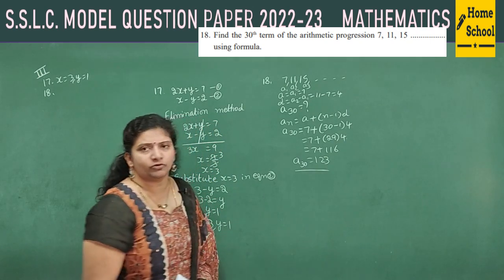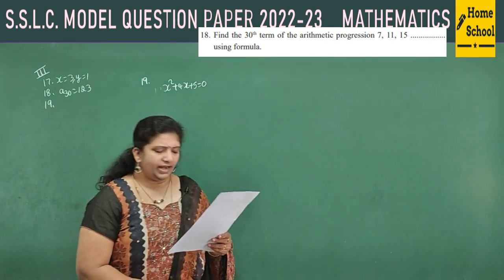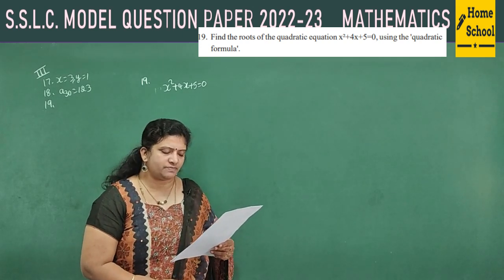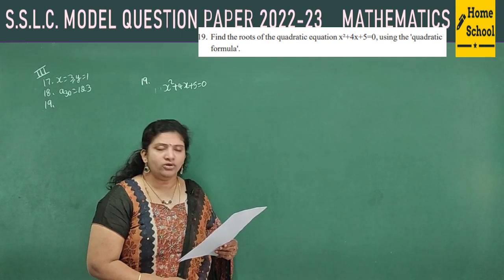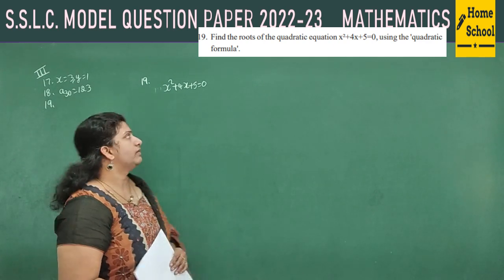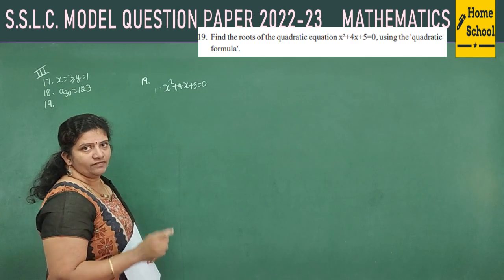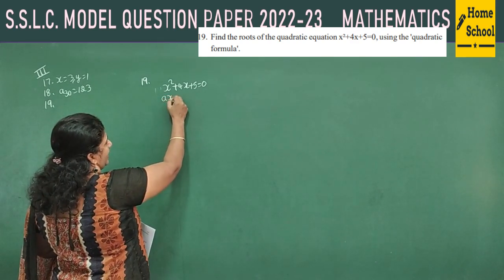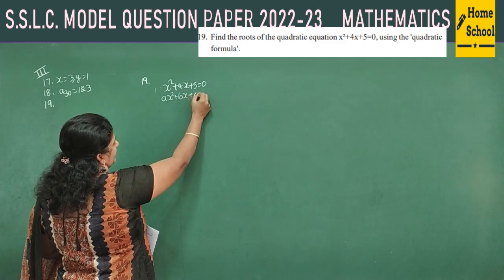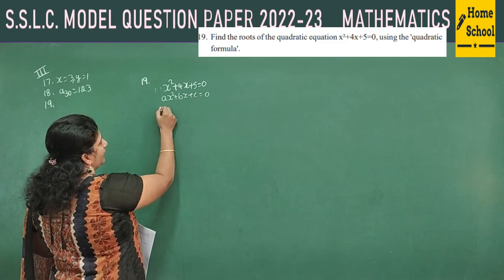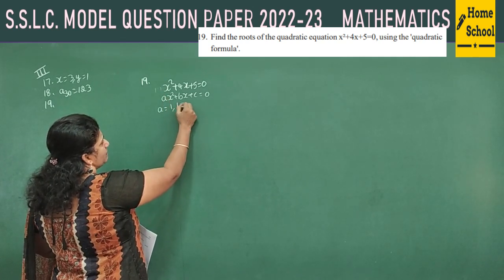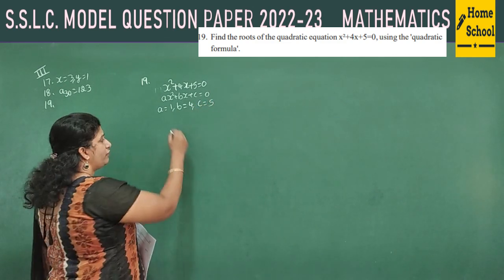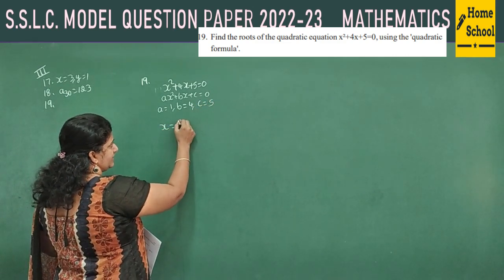Question 19: find the roots of the quadratic equation x² + 4x + 5 = 0 using the quadratic formula. First compare with the standard form ax² + bx + c = 0: a = 1, b = 4, c = 5.